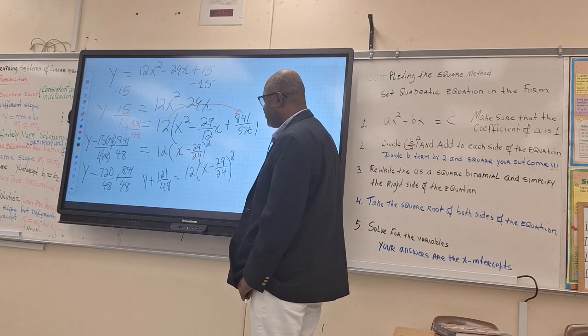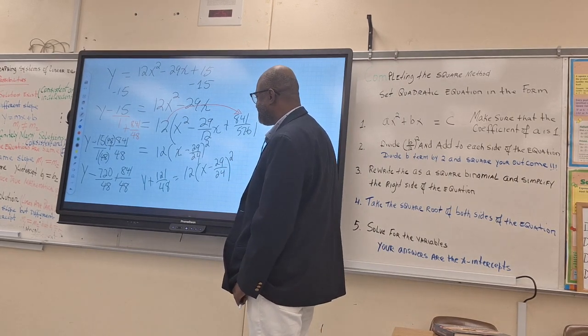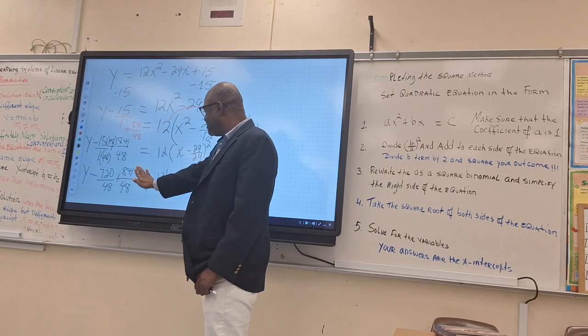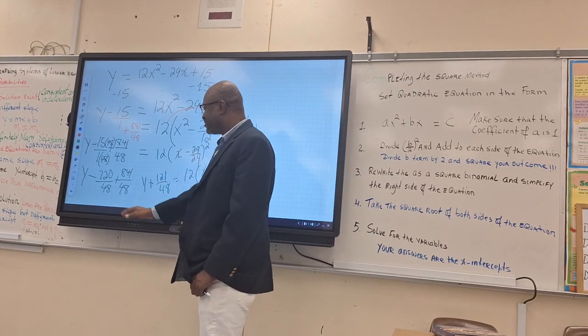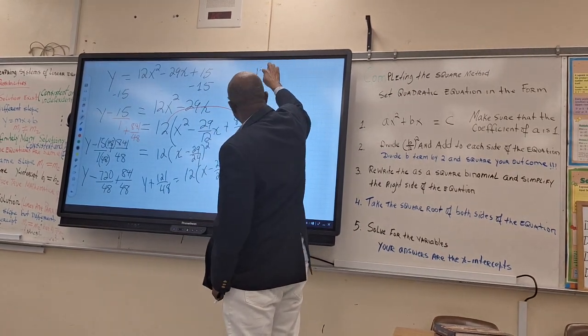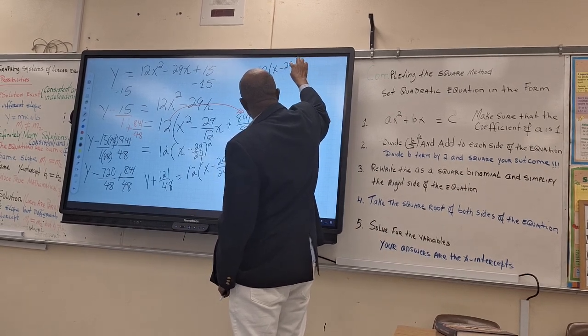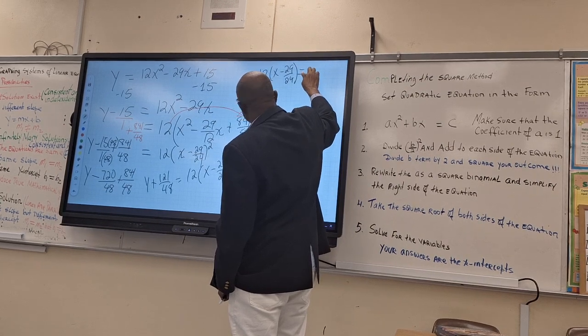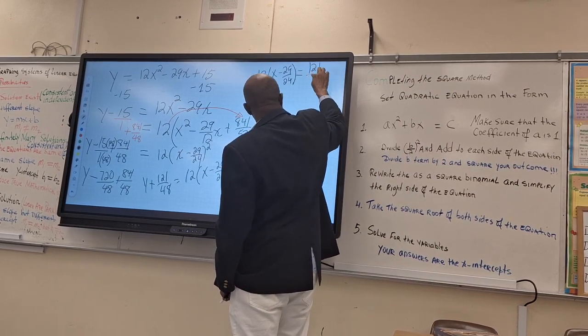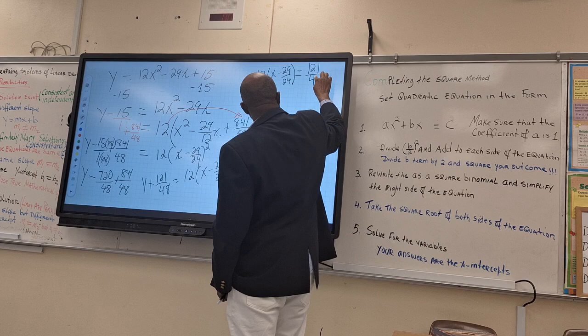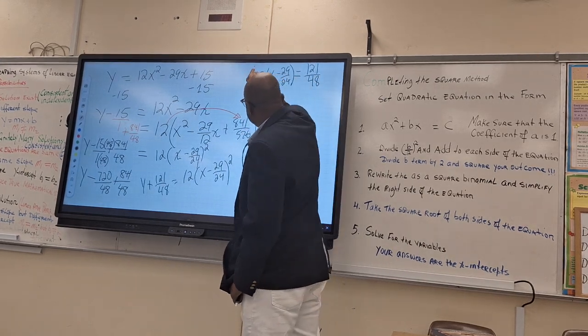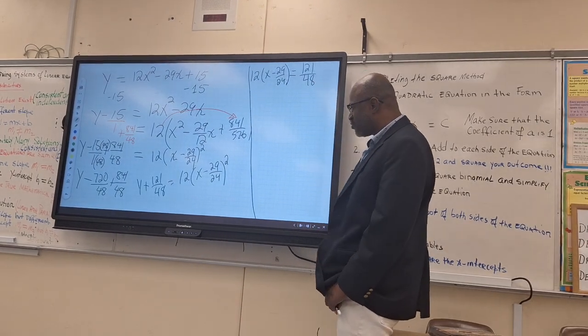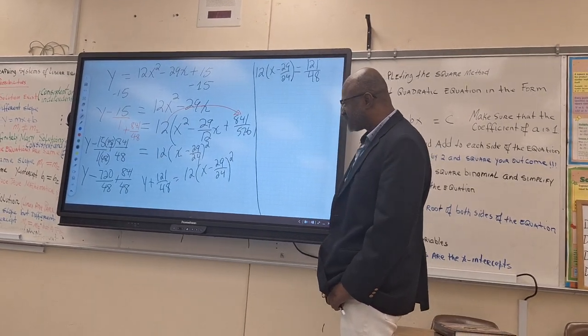So before we go there, since we want to find the x intercept, we're going to rewrite that expression again. Now we're going to help you to solve for y. Here, when you're solving for your x intercept, y is 0. So we'll end up with 12 times x minus 29 over 24 is equal to 121 over 48. We'll use that to find our x intercept. Now let's solve for y. And that's how we want y to be by itself and your equation will be in vertex form.